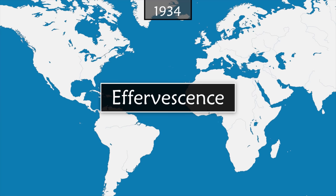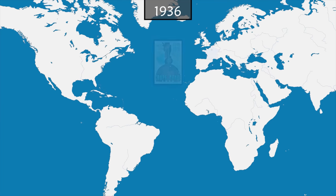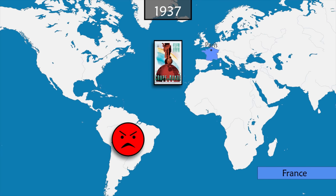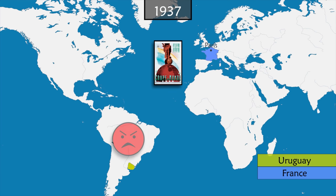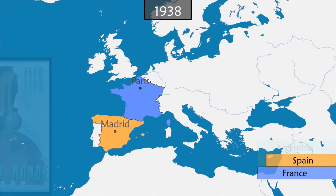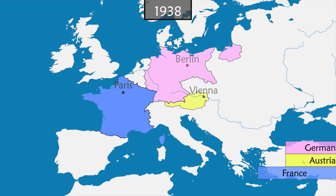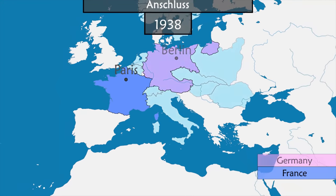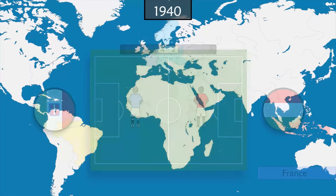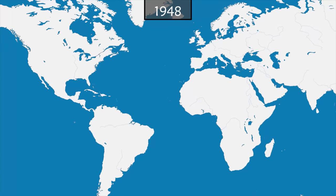In 1936, FIFA chooses to play the next World Cup in France, provoking the anger of Latin American countries who want the cup to be played alternately between the two continents. Uruguay and Argentina decide not to participate. Spain, in the middle of a civil war, does not participate either, and a few months before the cup, Austria — which had qualified — is annexed by Nazi Germany. In the final, Italy retains its title by beating Hungary 4–2.